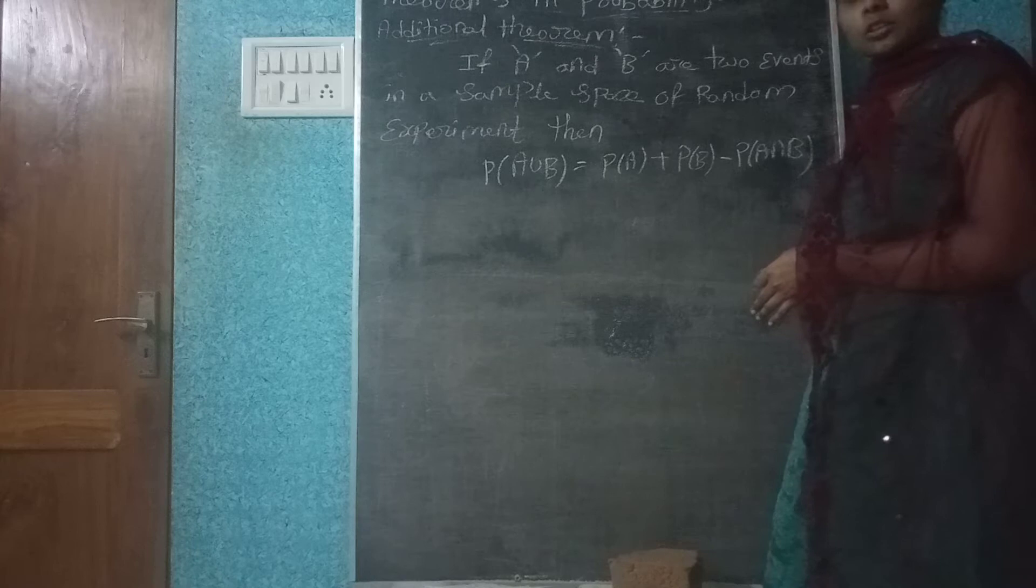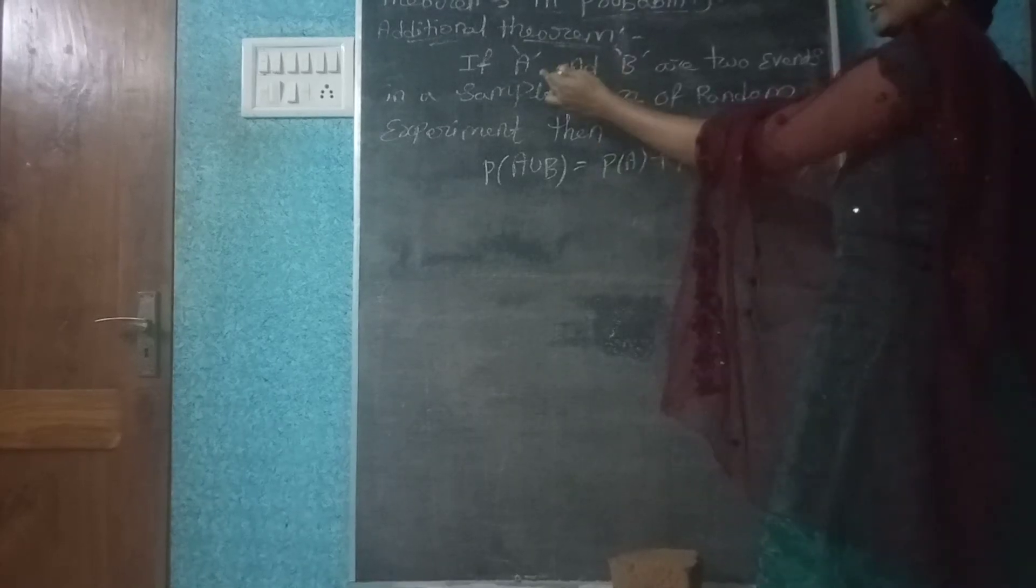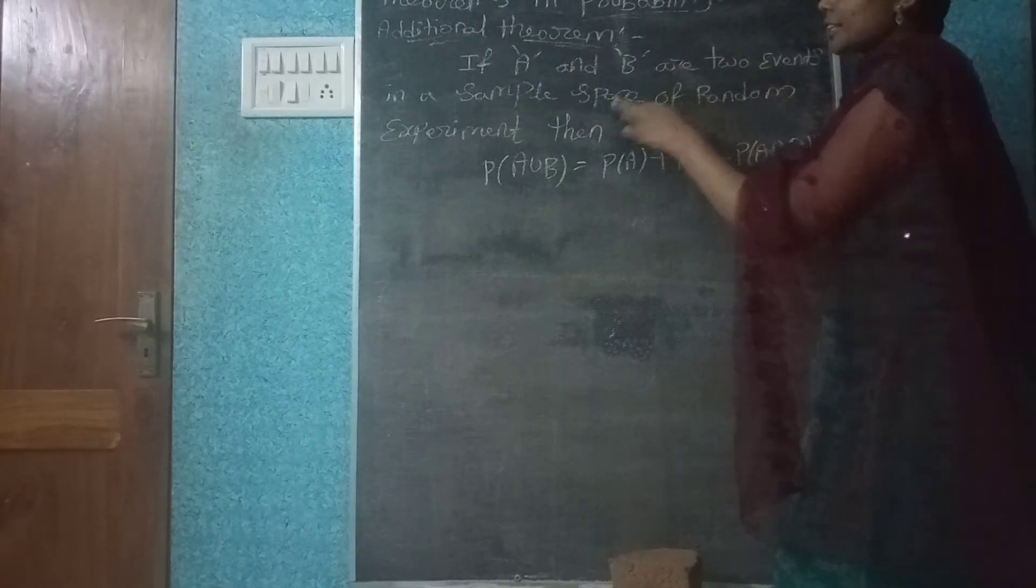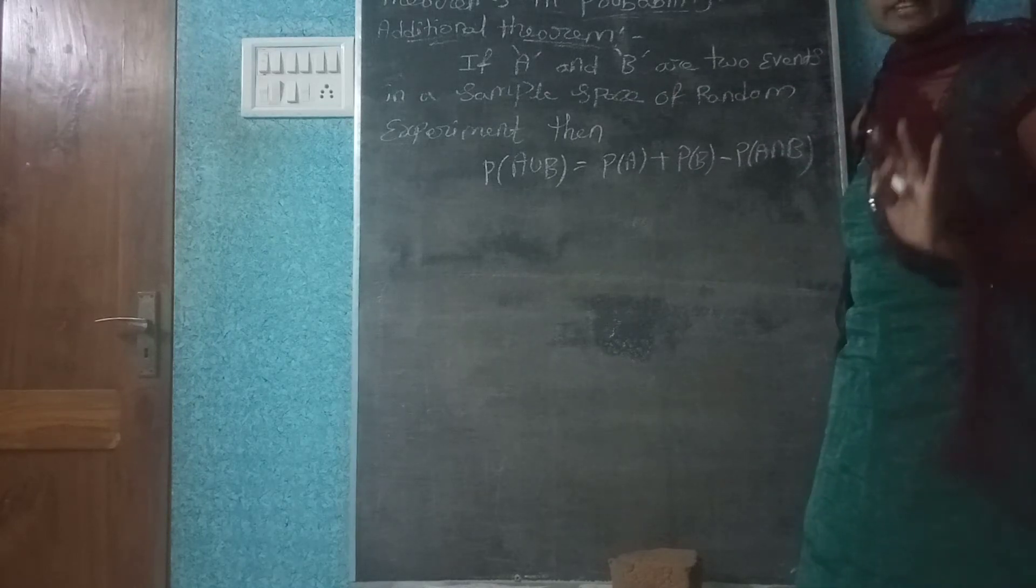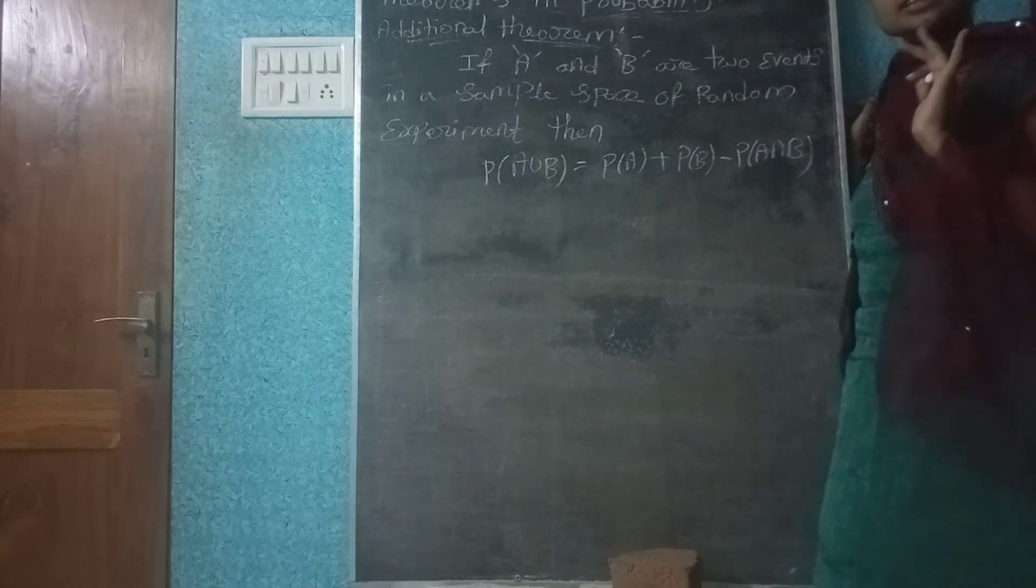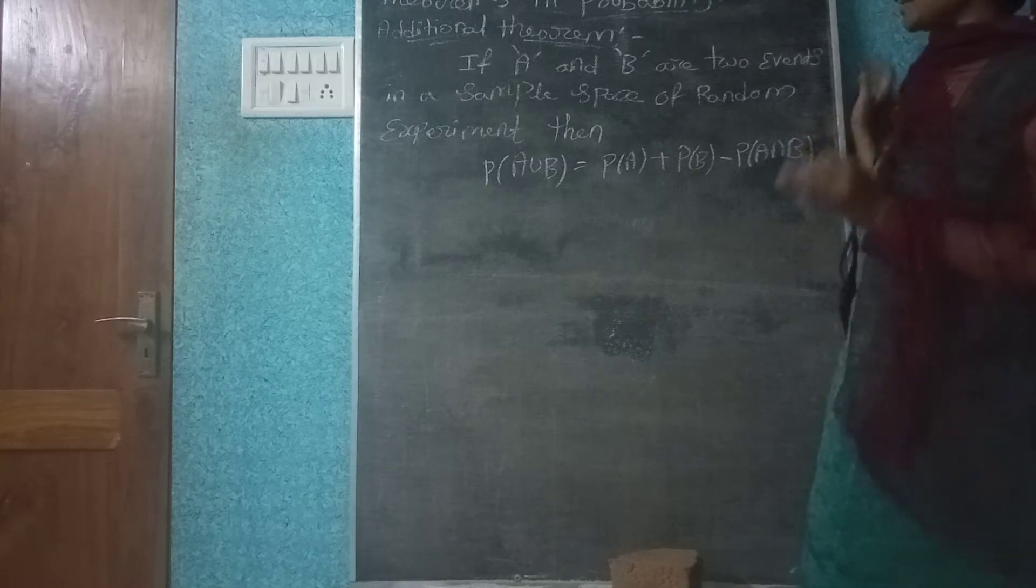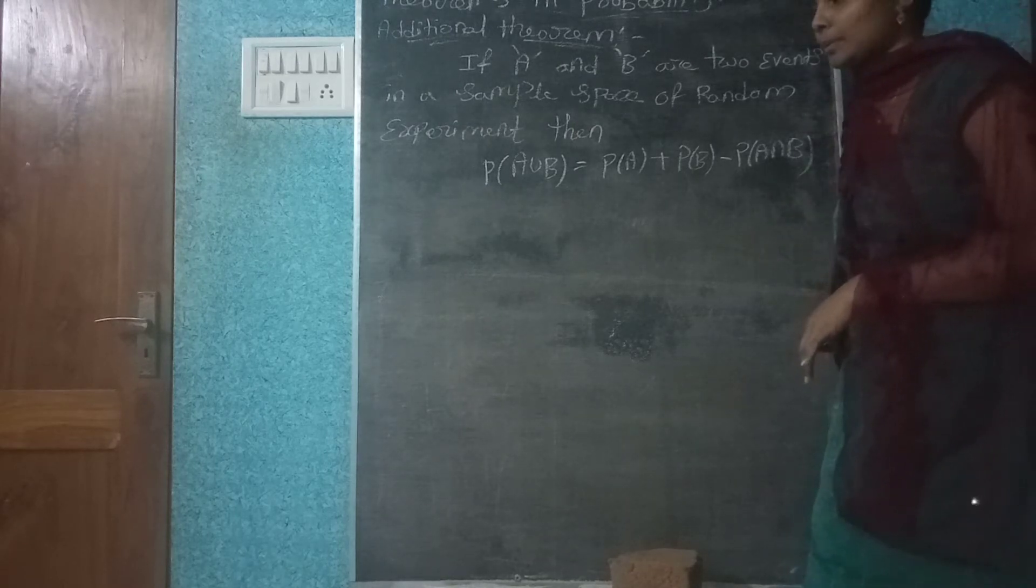Then, what is proof? So, if A and B are two events in a sample space of a random experiment,